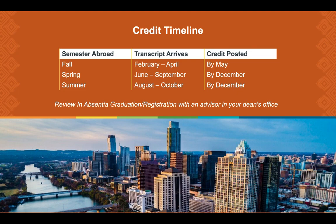In general, it may take up to one long term after your program for your credits and grades to be reflected on your UT academic record. For students who go abroad during the fall term, we will likely receive your transcript in mid-February to early April and will post your credits to your record by May. For spring and summer students, we usually receive transcripts from mid-summer to mid-fall and your credit will be posted to your record by December.